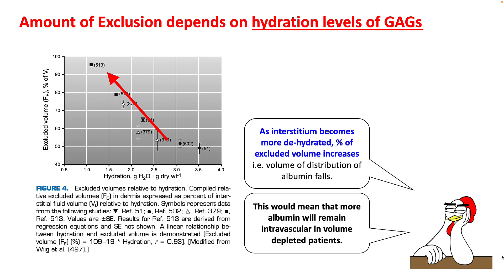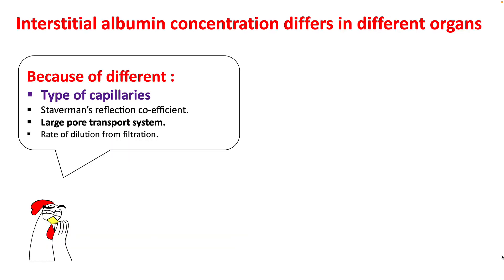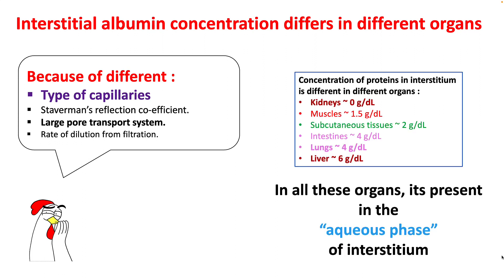Since glycosaminoglycans are negatively charged like albumin, the amount excluded is much higher and albumin cannot enter these spaces. GAGs are more exclusive due to their negative charge compared to collagen, and the amount of exclusion also depends upon the hydration level of glycosaminoglycans. As the interstitium becomes more dehydrated, the percentage of excluded volume increases, so the volume of distribution of albumin falls further with dehydration. Interstitial albumin concentration also differs between organs due to different leakiness of capillaries — kidneys have almost no proteins in the interstitium, while liver and lungs have high amounts. In all these organs, albumin is present only in the aqueous phase.